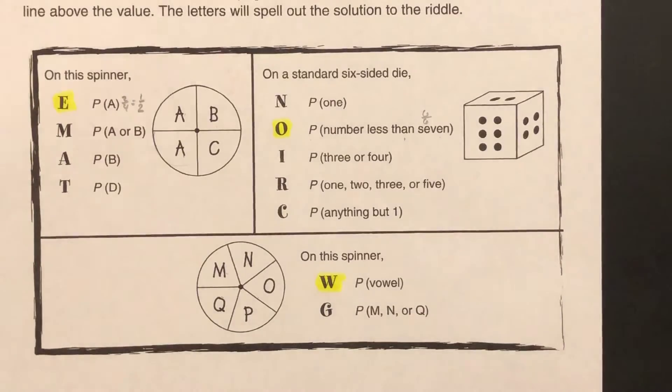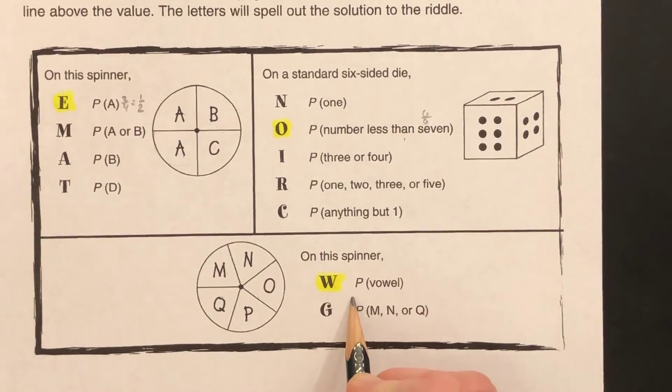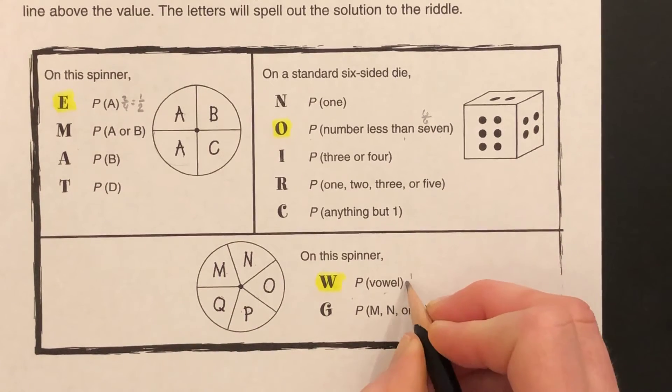Finally, we'll go down here. On this spinner, what's the probability of landing on a vowel? There is one vowel, one, two, three, four, five, and five possible outcomes. It would be one-fifth.